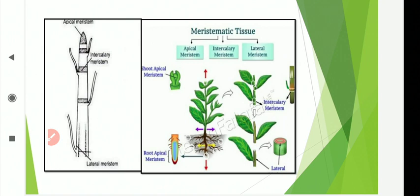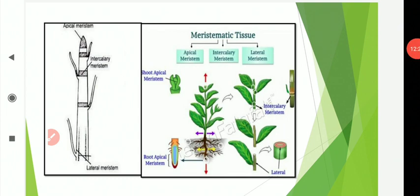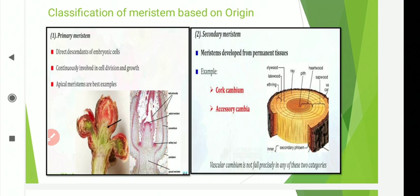The next classification of meristem is based on origin: primary and secondary meristem. According to stage of appearance, meristematic tissue is classified into two types. Primary meristem is the meristem of the original plant body or organ — it develops directly from cells of the embryonic state and remains meristematic throughout its life, also called pro-meristem. The meristem present at the apices of root, stem, and in buds are examples of primary meristem, and they are responsible for development of the primary plant body.